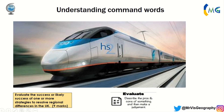The final command word is 'evaluate' — for example: evaluate the success or likely success of one or more strategies to resolve regional differences in the UK. Evaluate means you describe the pros and cons and make a judgment. For example, HS2 will connect northern and southern UK — tell me the pros and cons, then pick another strategy, and overall say which strategy you believe is better. Use a PEEL paragraph, give positives then counter them with cons, then in a conclusion tell me which one you think would bring most success.